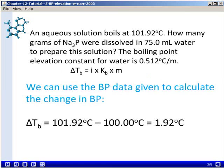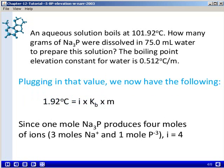We can use the boiling point data given to calculate the change in boiling point. We know that the boiling point for pure water is 100 degrees Celsius. So the change in boiling point is 101.92 degrees Celsius minus 100 degrees Celsius, giving us the value of 1.92 degrees Celsius. We can now plug this value in for the change in the boiling temperature.